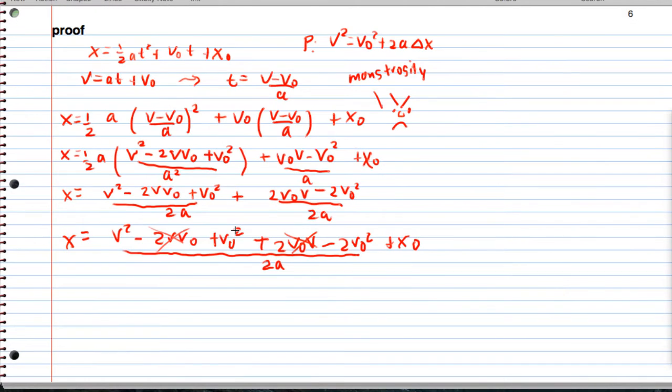And I notice that I have x equals, we have a plus v naught squared and a minus 2v naught squared here, so that simplifies to v squared minus v naught squared, all over 2a, plus x naught.